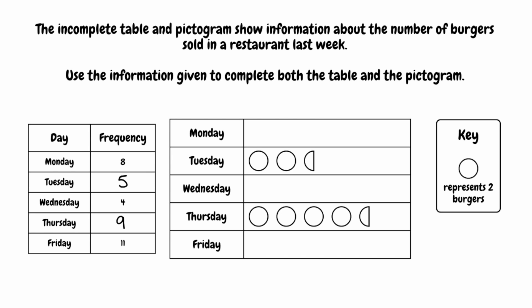So we now have a complete frequency table. Let's now complete our pictogram. For Monday, we know that eight burgers were sold. We know that a full circle represents two burgers, so we're going to need four full circles — that would be two, four, six, and eight.